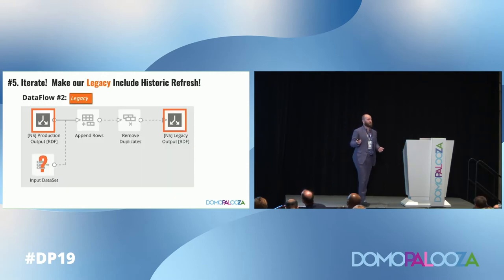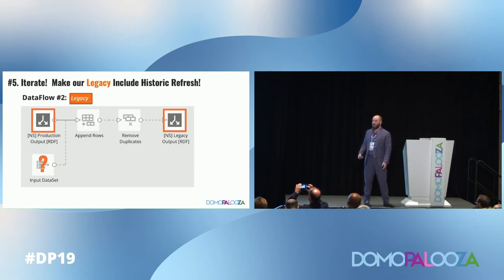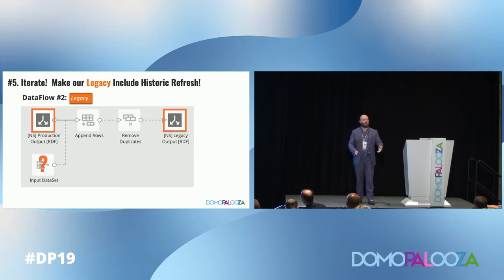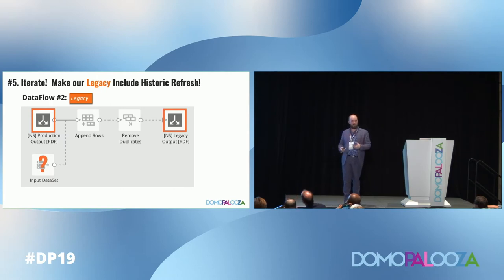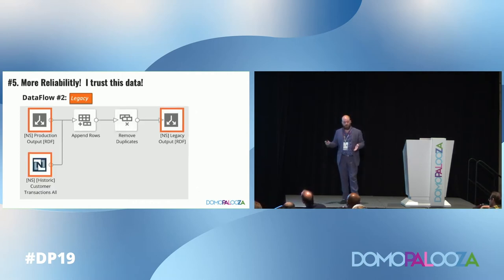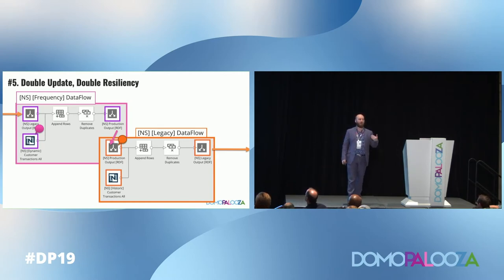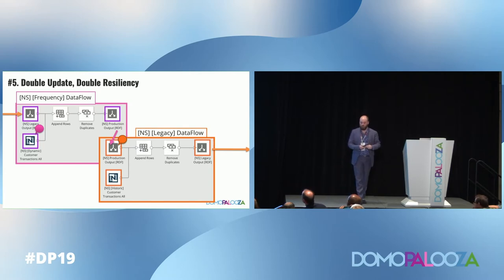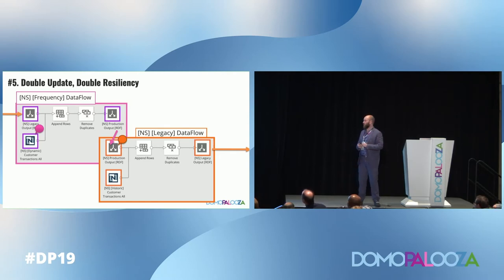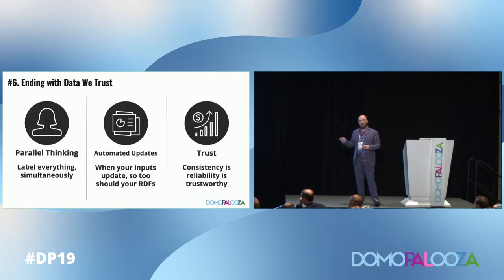In our NetSuite setup, we're still updating every 15 days — our financial team wanted to ensure that data is still there. In our legacy data flow, we put a new input data set: our historic customer transactions. Make sure that's not causing an unwanted update that overwrites your production data flow. The important thing was ensuring we weren't losing any data, even on giant bulk updates. This gives us double update and double resiliency, which our team really liked. Honestly, the hardest part was convincing them they could use the production output — which is why ending with data you trust is so important.